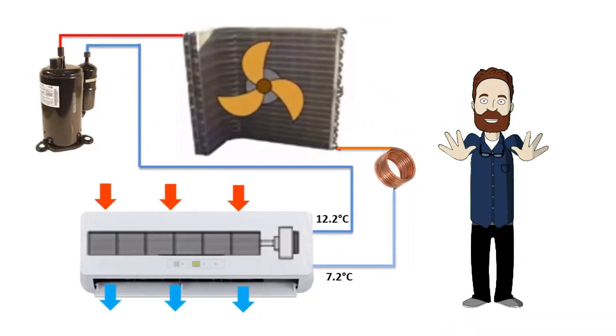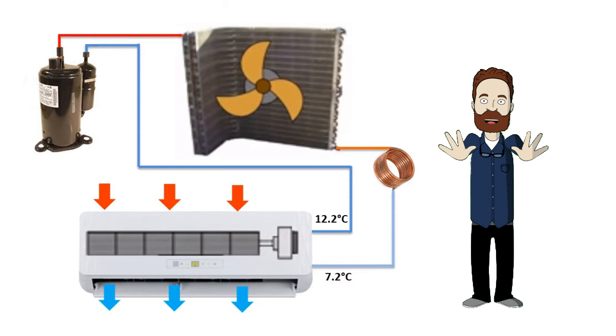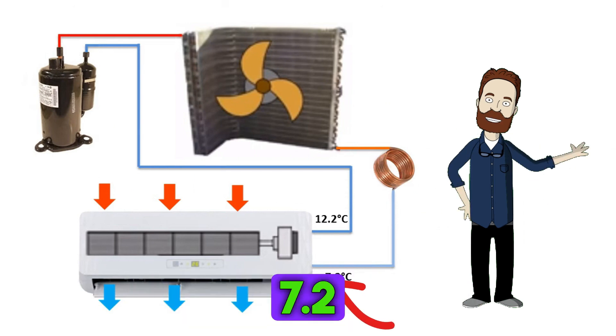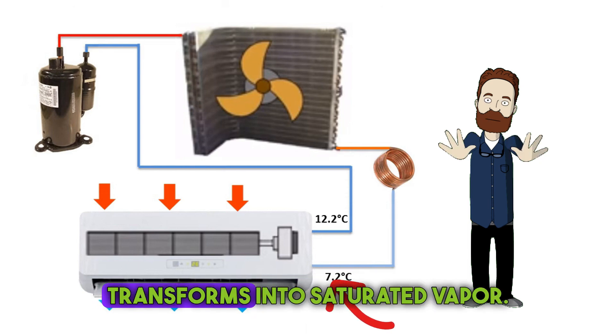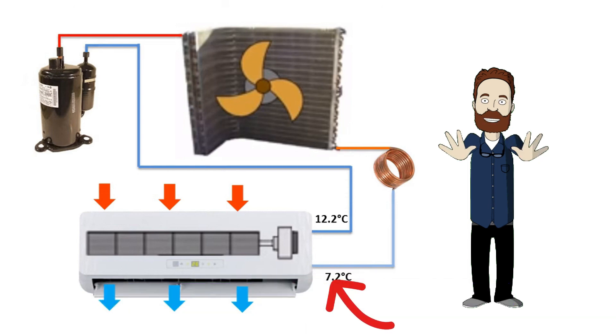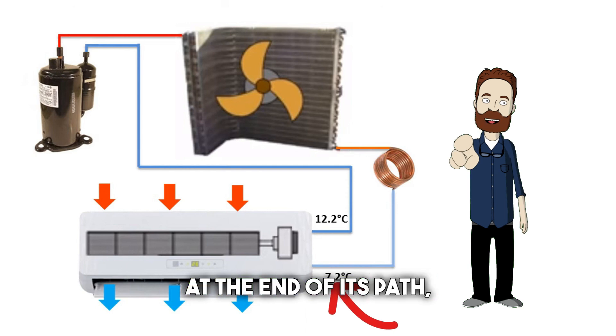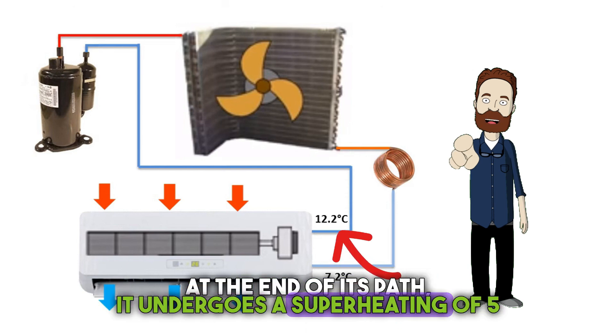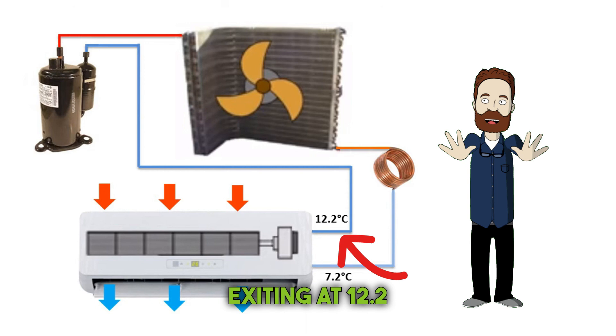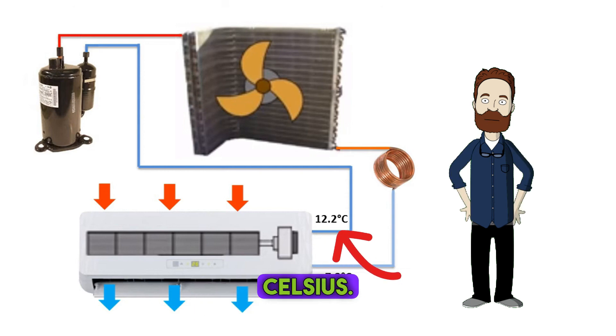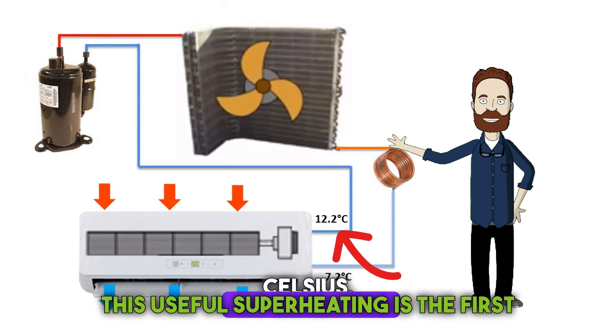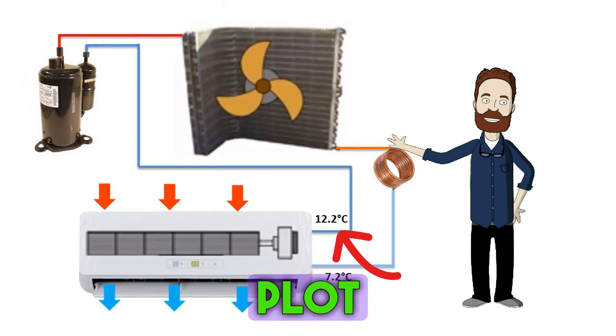In our setup, we have condensed gas entering the evaporator at a temperature of 7.2 degrees Celsius. During its journey, the gas transforms into saturated vapor. At the end of its path, it undergoes a superheating of 5 degrees, exiting at 12.2 degrees Celsius. This useful superheating is the first point we plot on the diagram.